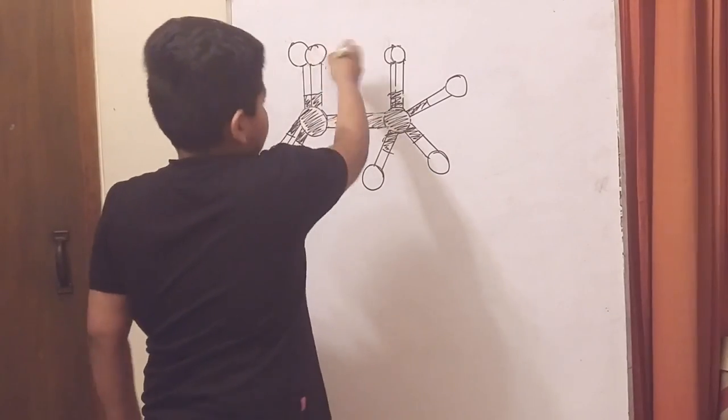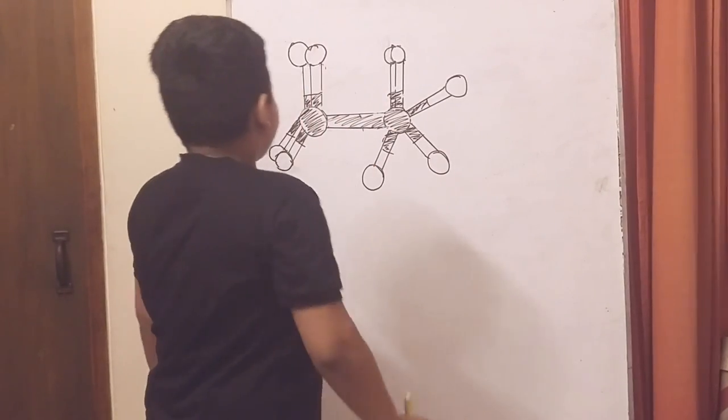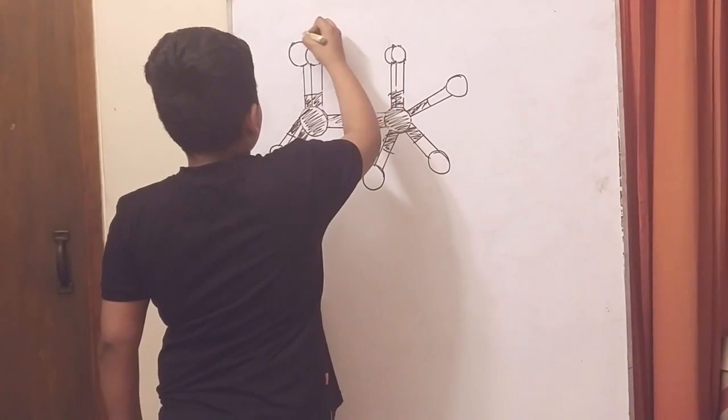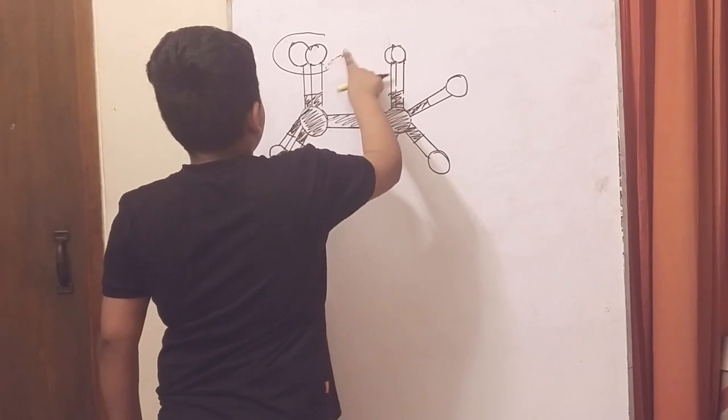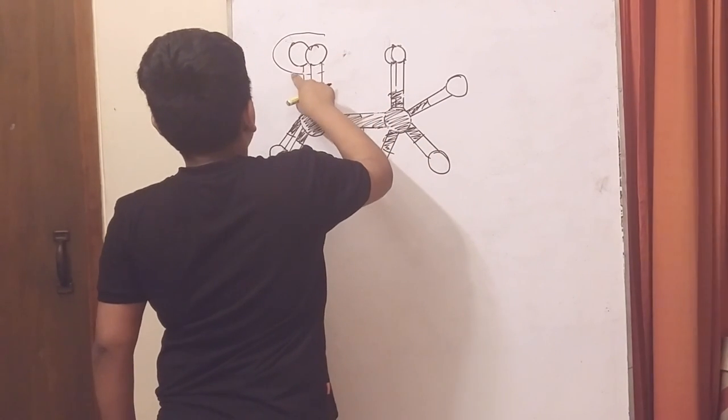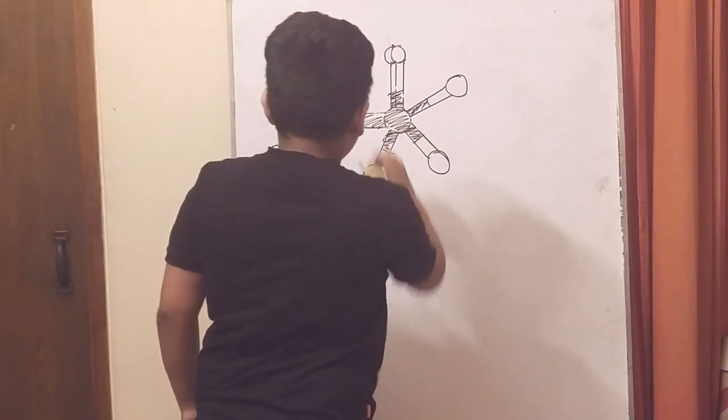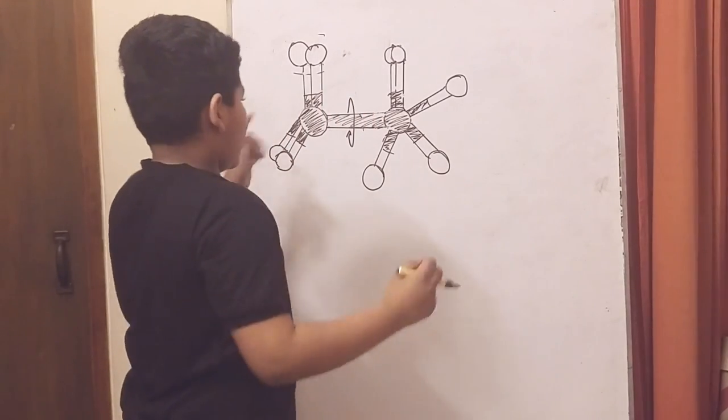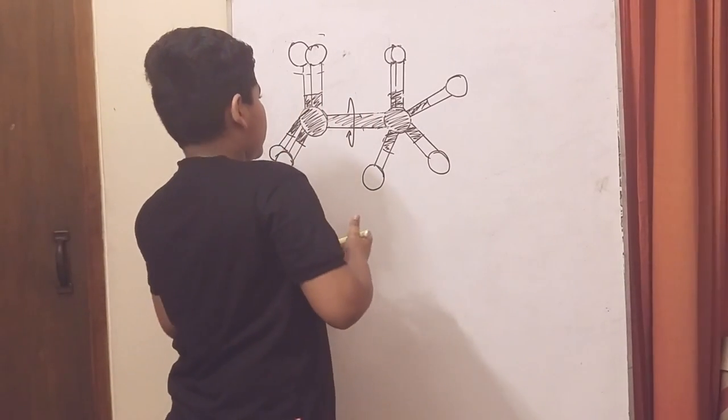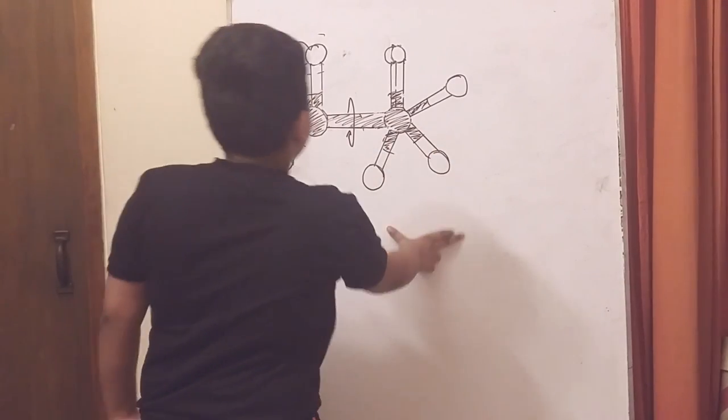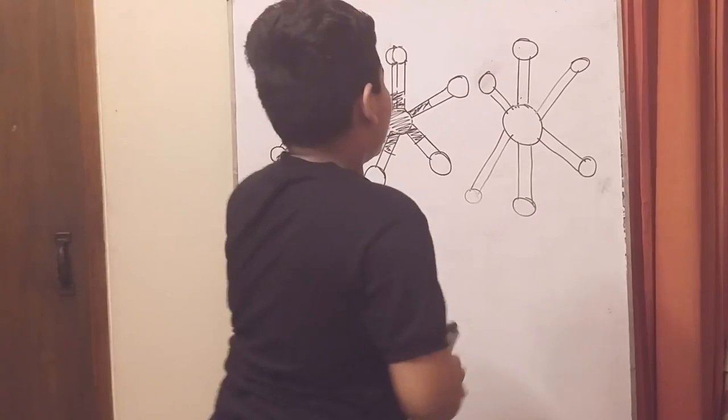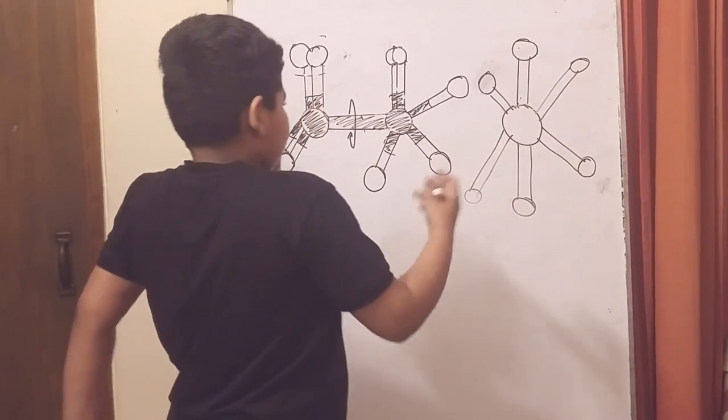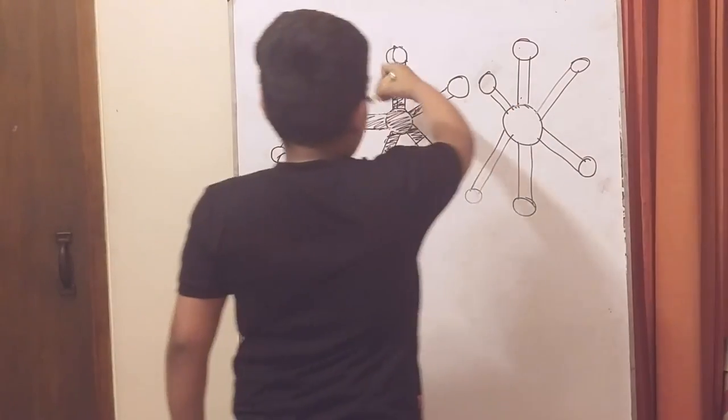If we rotate this carbon-hydrogen bond, nothing is really happening. But if we rotate this carbon-carbon bond, we really do change the shape here. When we rotate this, we get different conformations.